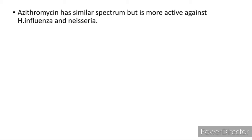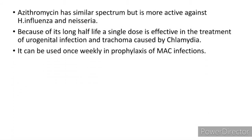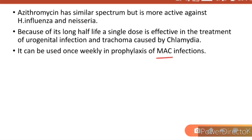Azithromycin has a similar spectrum but is more active against Haemophilus influenzae and Neisseria. Because of its long half-life, a single dose is effective in the treatment of urogenital infection and trachoma caused by Chlamydia. It can be used once weekly in prophylaxis of MAC infections — Mycobacterium Avium Complex — which are most commonly seen in HIV patients and are life-threatening.